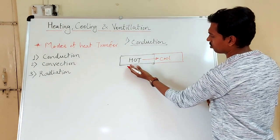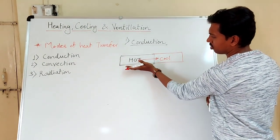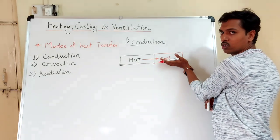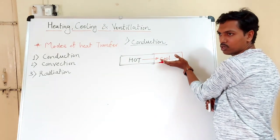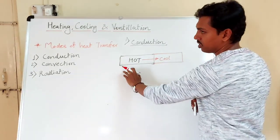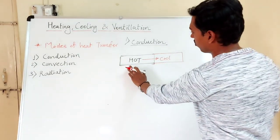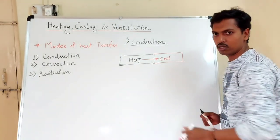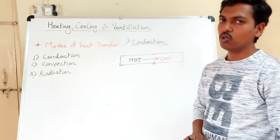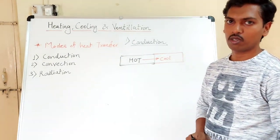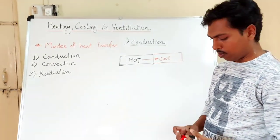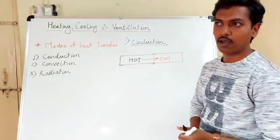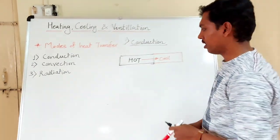Consider a hot body and a cold body. Heat flows from the hot body to the cold body: the temperature of the hot body goes on decreasing while the temperature of the cold body goes on increasing. So heat is transferred from higher temperature to lower temperature.